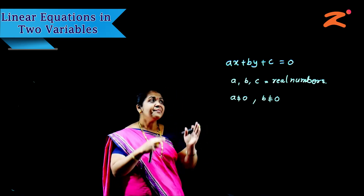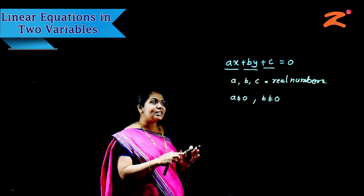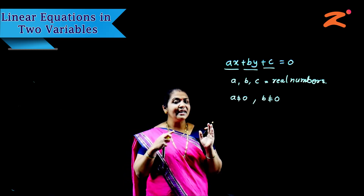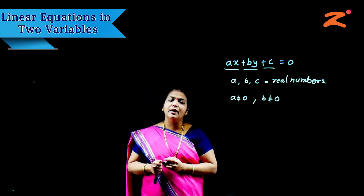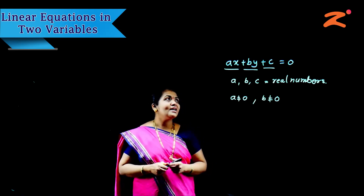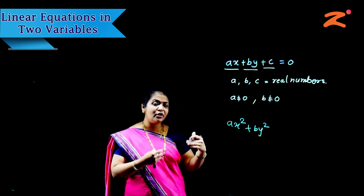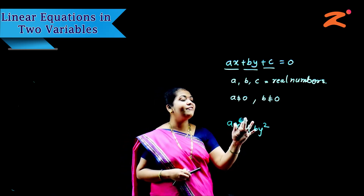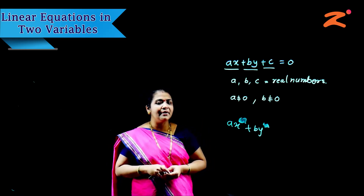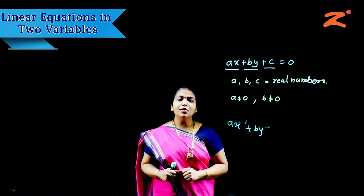So in the general format AX plus BY plus C equals 0, A, B, and C are real numbers and both A and B should not be 0 at the same time. The definition of a linear equation with two variables is: an equation which has two variables and the degree of each variable is 1. There is no square or cube — the degree is only one.